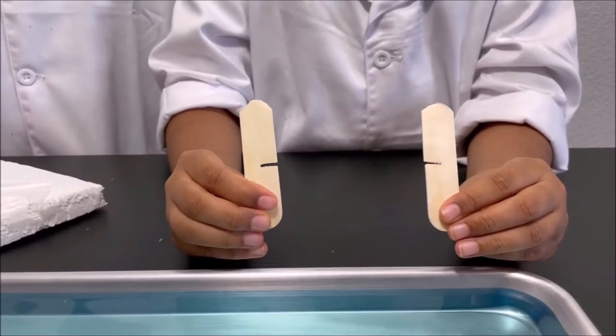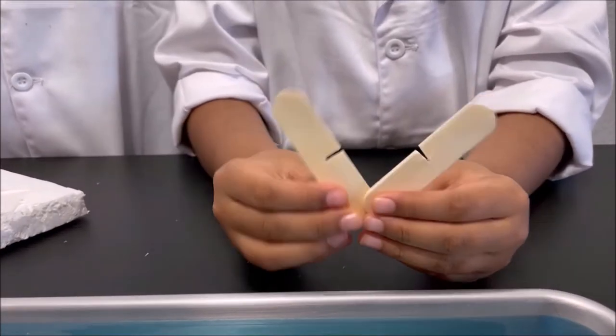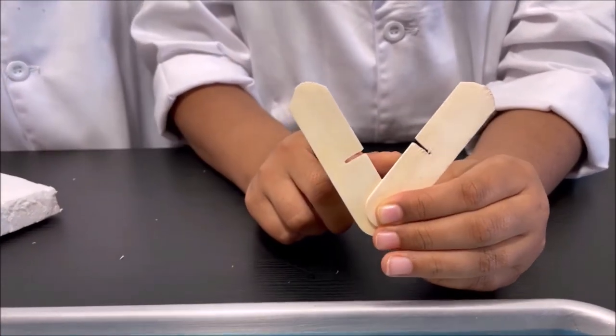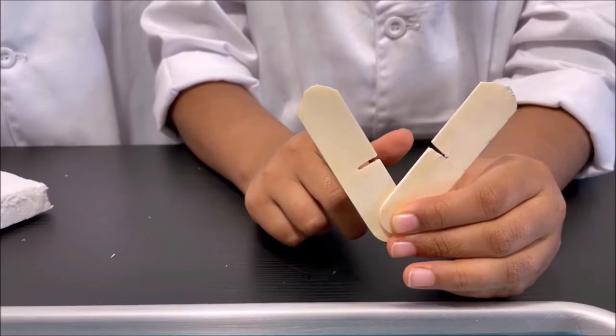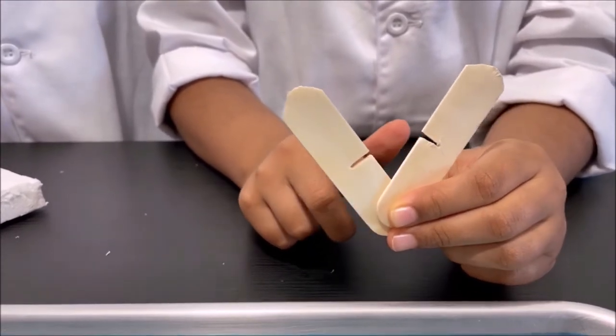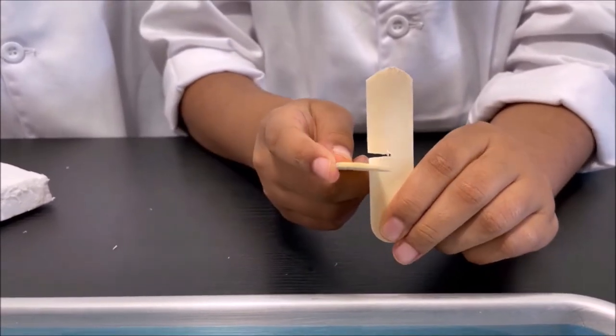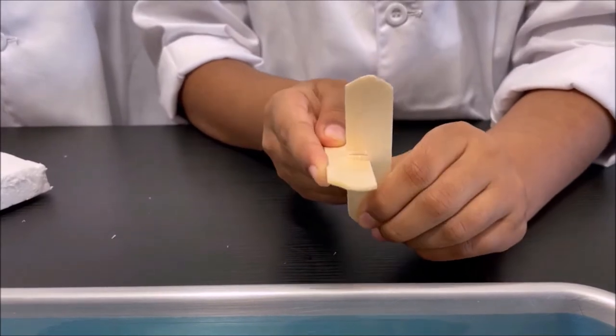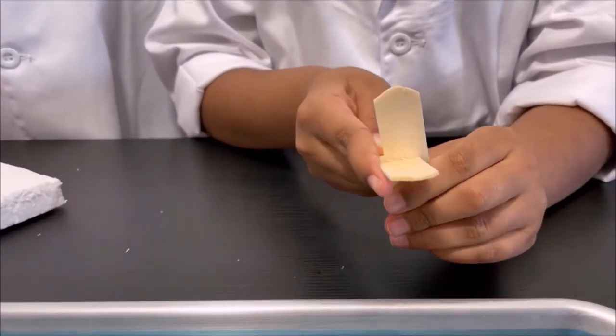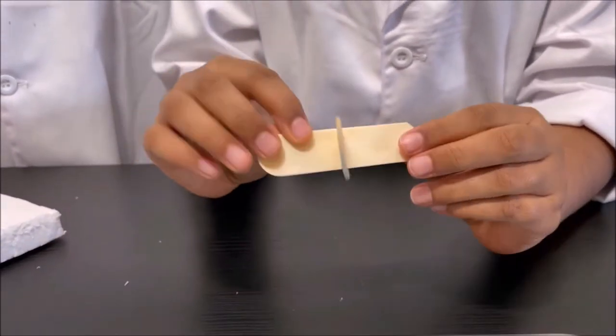Get two small pieces of popsicle sticks and make a small cut on each one, put them together, and you get a paddle.